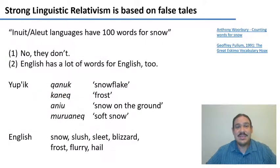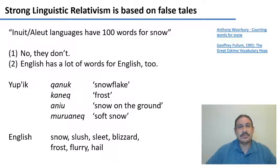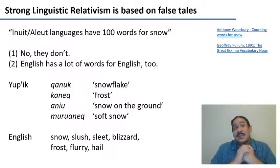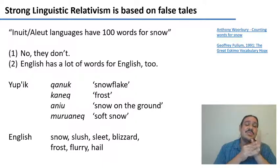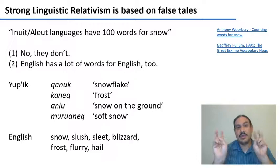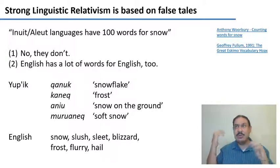So those are two reasons why language cannot determine your thoughts. A third reason is that most of its arguments are based on false tales and stories. For example, there have been urban legends for a hundred years that languages like Inuit and Aleut languages spoken in Alaska and Northern Canada have a hundred words for snow, and that this must say something about the way they view the world.